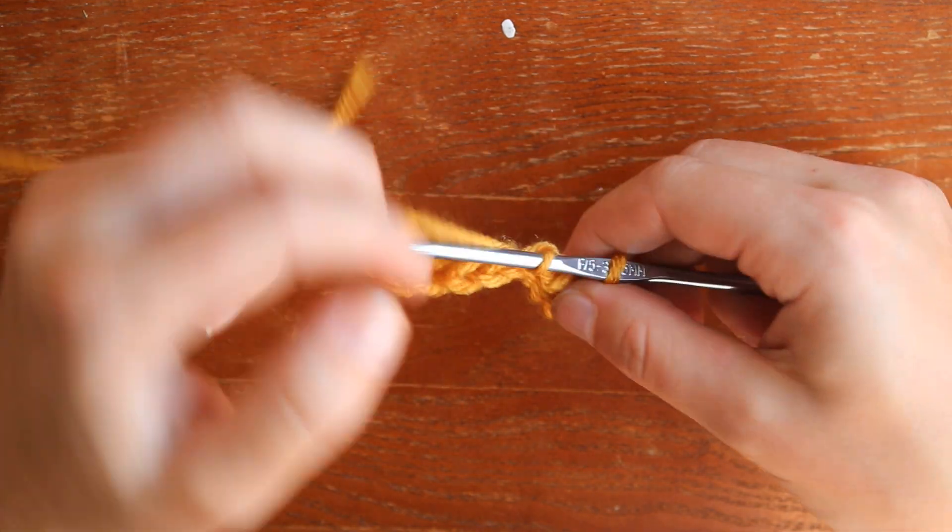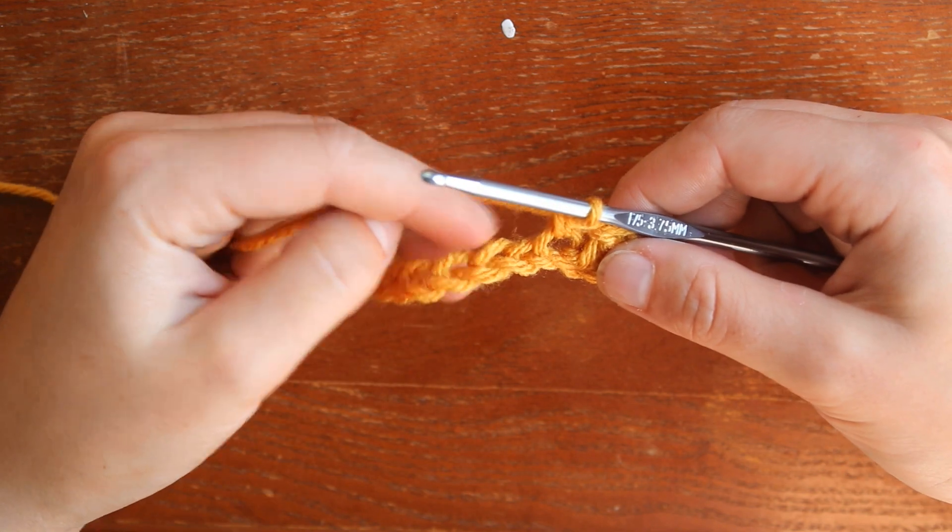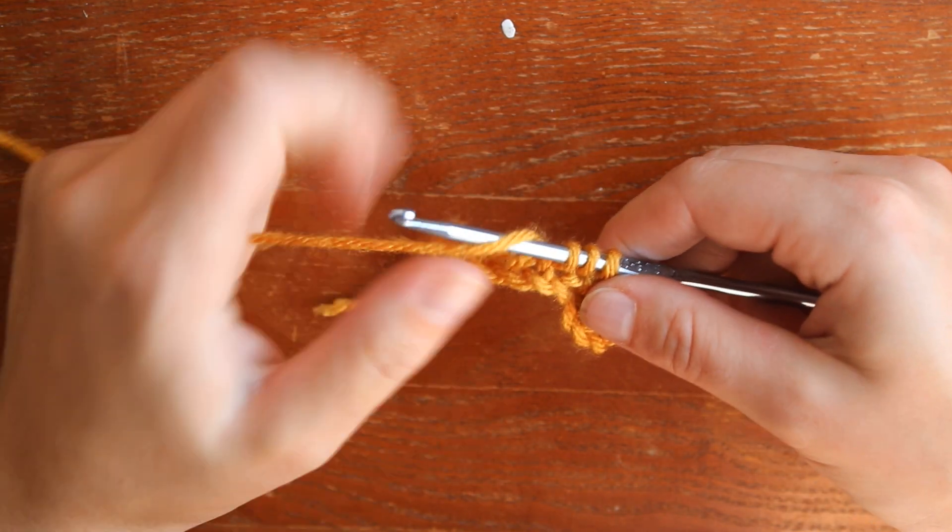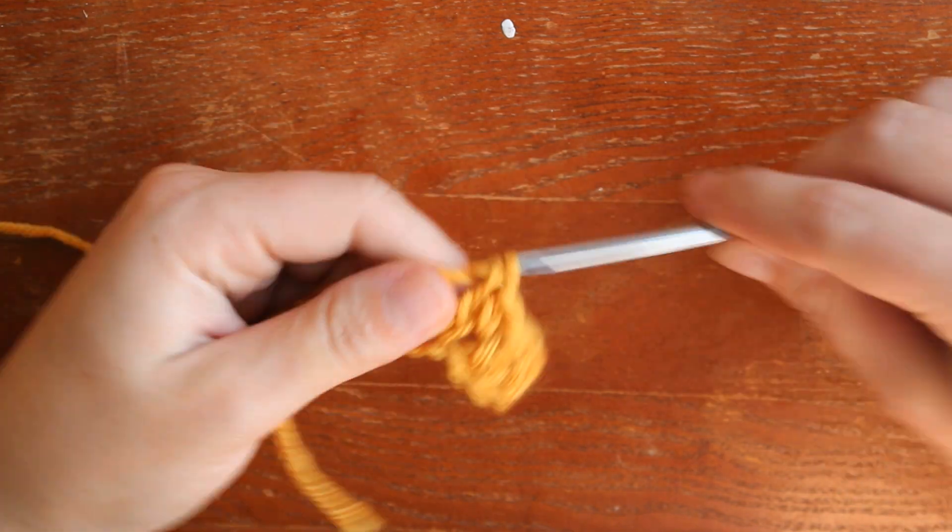Then we do a single crochet and then we do a double crochet, and we just keep repeating that pattern until we get to the end. Single crochet then double crochet.